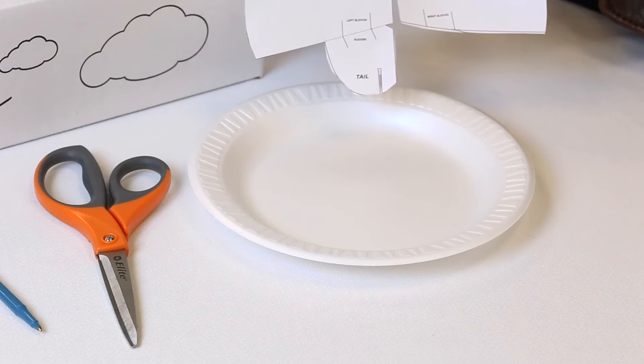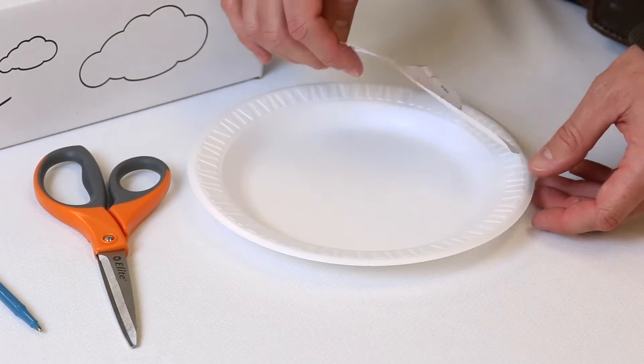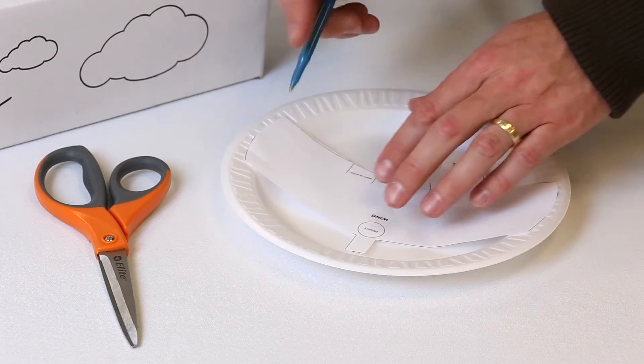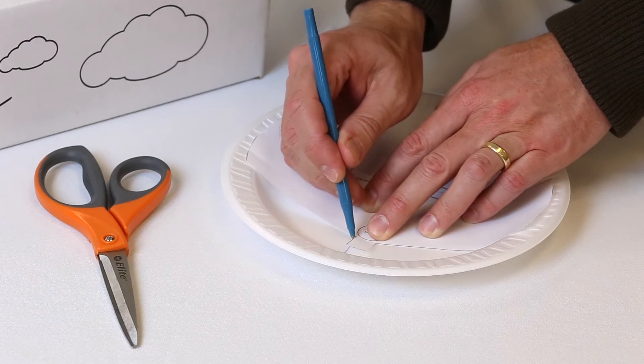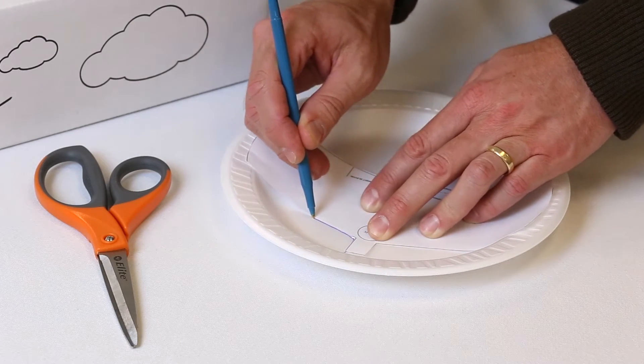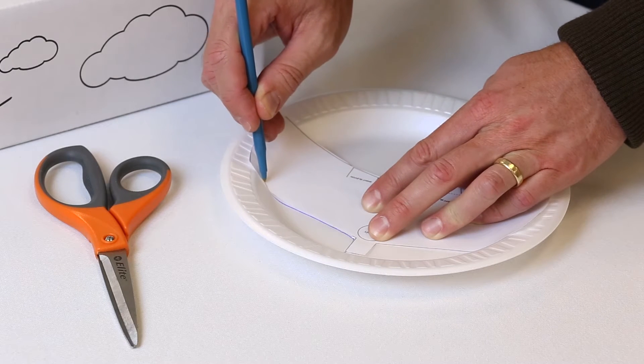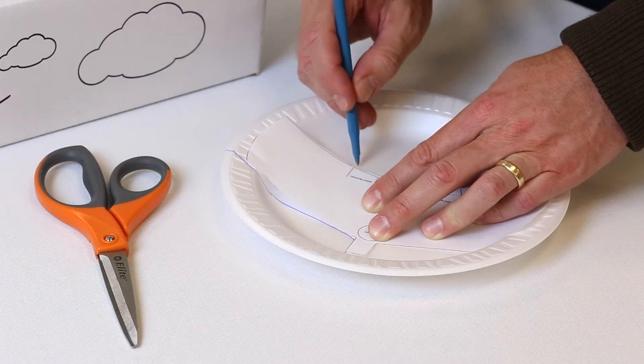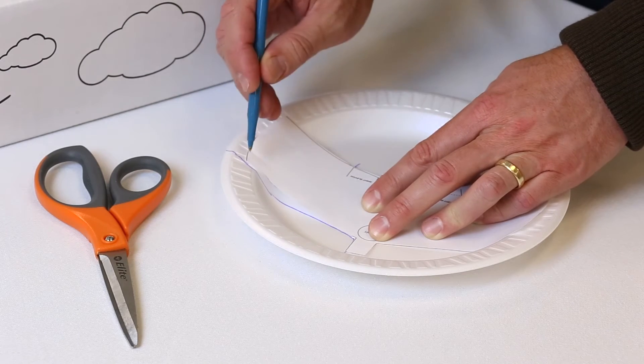Next, you're going to place the pattern in the center of the plate and trace around it. Make sure to mark all the lines. So put it in the flat part of the plate. And as you trace your lines around, make sure to note the indentations and also the right and left elevons to note where to make cuts in your paper plate.